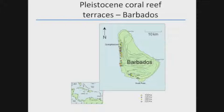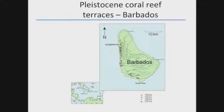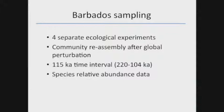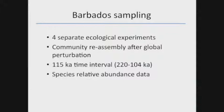You can think of this as four separate ecological experiments — re-running the tape. The sea level falls, leaves the terraces and reef high and dry, and when sea level rises again you start a brand new reef and can examine community composition after that event. Four time periods over about 115,000 years, looking at species relative abundance data. There were slightly different temperature and CO2 conditions across the four reef-building episodes, but nothing too dramatic compared to what's happening today — some variability in those interglacial periods.